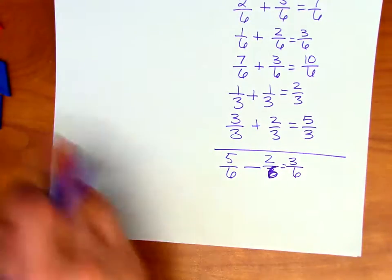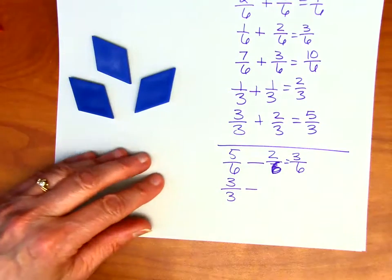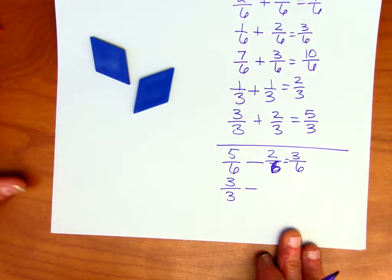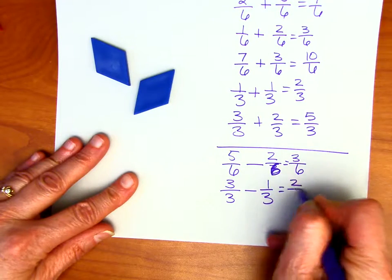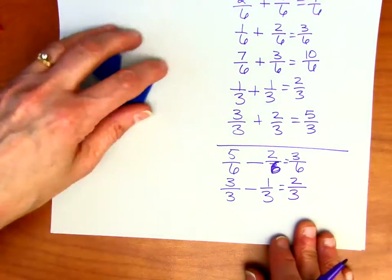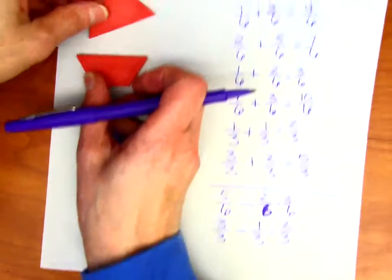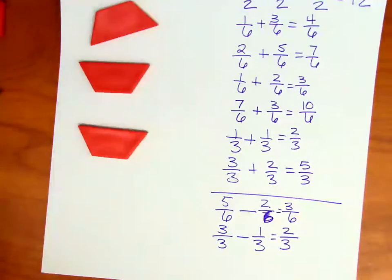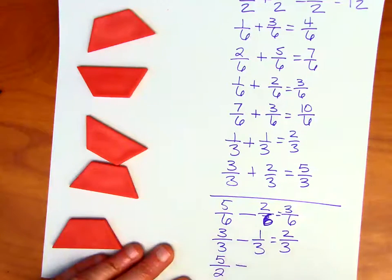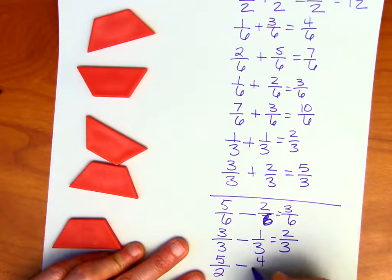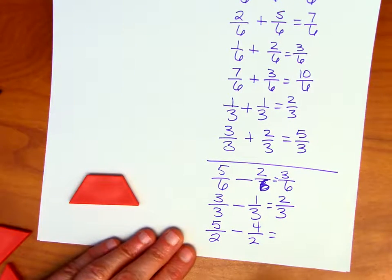Let's say we've got three-thirds, and I'm going to take away one-third. How many thirds are left? Two-thirds. And let's do one more. We'll do an improper fraction here. Let's say we have five halves, and I'm going to take away four halves. How many are left? One half.